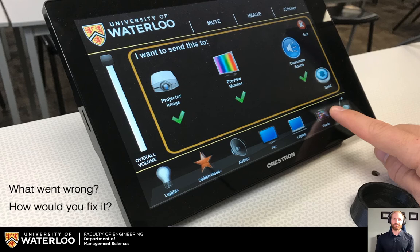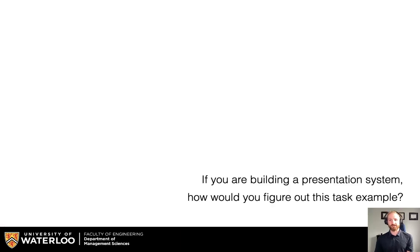So how would you fix something like this? Well, you might use some of your design principles, but you may also want to collect some data to understand what people's tasks are. So if you're building a presentation system, how would you figure out this task example to make sure that this is something that you can actually support in your design?